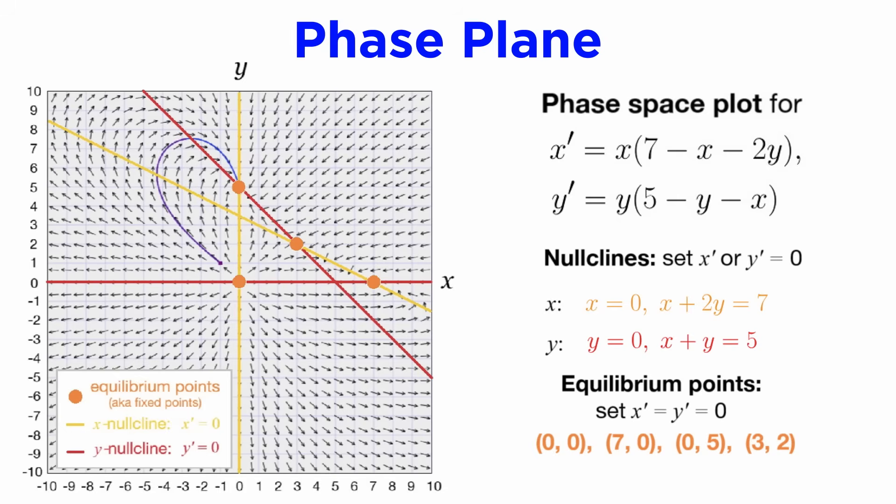The equilibrium points, also known as fixed points, are the points where all null clines intersect each other, since it is at those points that the rate of change of the state vector x is zero, so a trajectory that reaches there will never move. It is useful to know that for homogeneous linear systems, the only equilibrium point will be the origin.